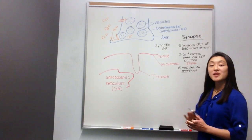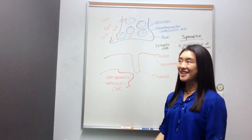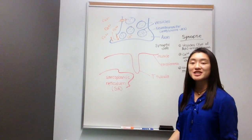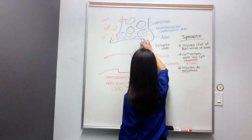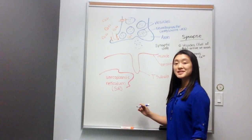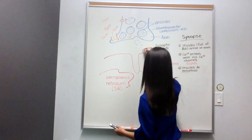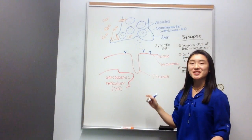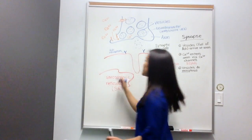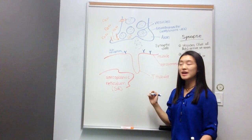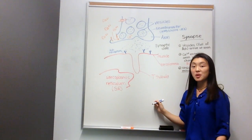Exocytosis means that the vesicles are leaving the cell. We have to remember that the axon is part of a neuron, which is a cell. Even though the neuron doesn't look like a normal cell, it performs all the functions of a normal cell — it has a nucleus and it can do exocytosis. When the vesicles perform exocytosis, the acetylcholine is released into the synaptic cleft. These Y-shaped structures are called acetylcholine receptors, and there are many acetylcholine receptors along the sarcolemma. Plenty of acetylcholine is entering the synaptic cleft and arriving at the acetylcholine receptors.